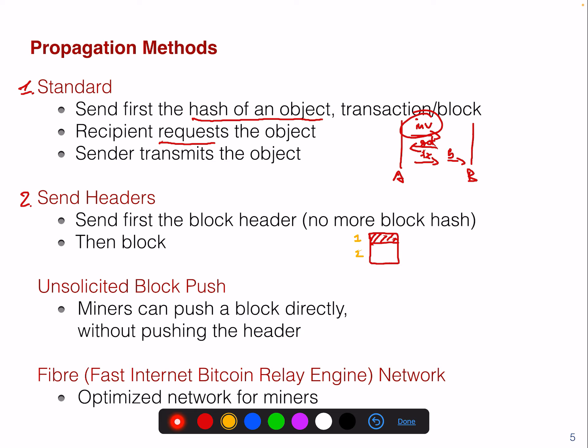So you first send the header and then the block contents. The advantage is that the block header in Bitcoin is about 80 bytes in size — it's quite small. In Ethereum it's slightly bigger because we have these Merkle roots, several Merkle roots in there, but the same approach applies. So you can also use the send headers approach.